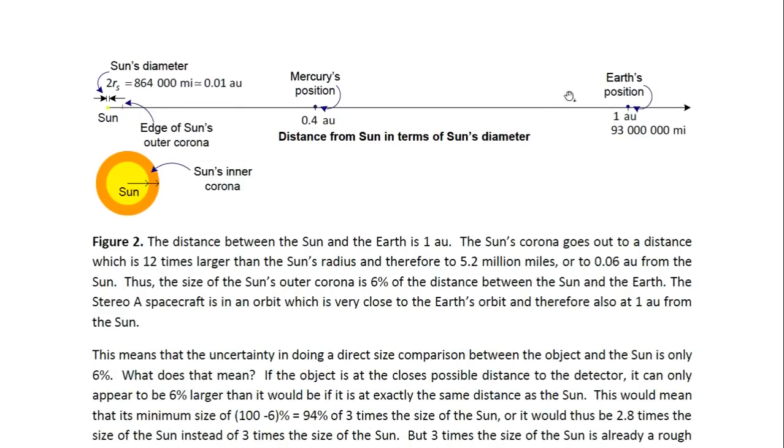And here we have a graph that defines the distance between the Sun and the Earth, given in terms of astronomical units where 1 AU is the distance between the Sun and the Earth. So 1 AU stands for 93 million miles. You can see Mercury's position is about 0.4 AU, so 40 percent of the distance between the Sun and the Earth. And here we see this is the diameter of the Sun, and the Sun's diameter is 864,000 miles, so this is about 0.01 AU.